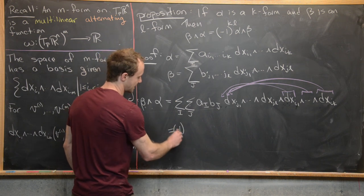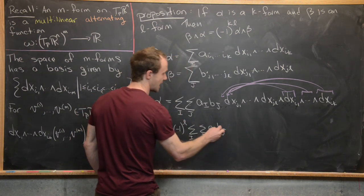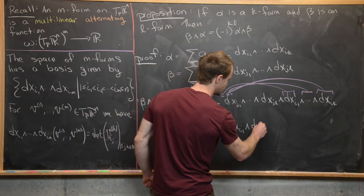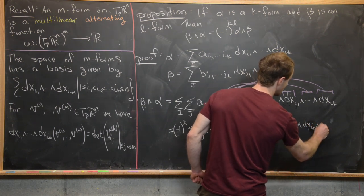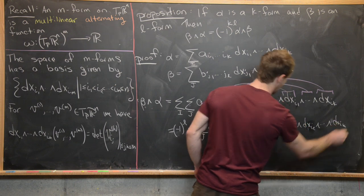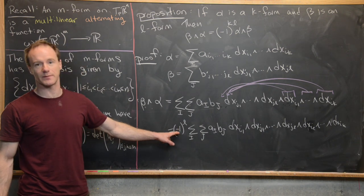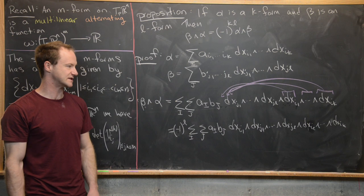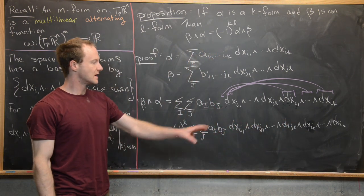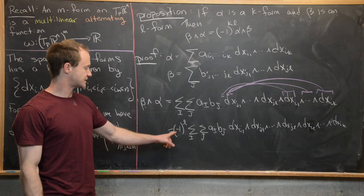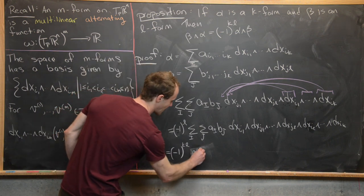Moving each dxᵢ past l adjacent terms picks up (−1)^l per term. Moving dxᵢ₁ all the way left gives a factor of (−1)^l. Since we do this for all k terms dxᵢ₁ through dxᵢₖ, we accumulate k copies of (−1)^l, giving an overall factor of (−1)^(kl). The reordered expression is then exactly (−1)^(kl) times α ∧ β, completing the proof.